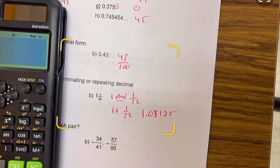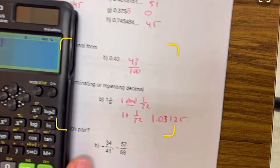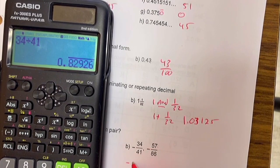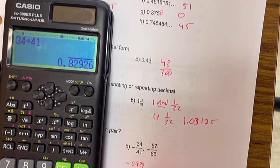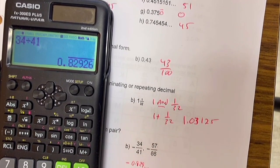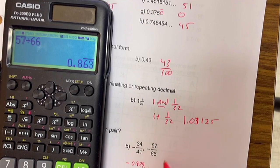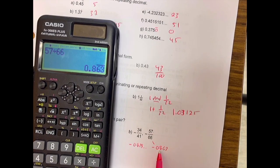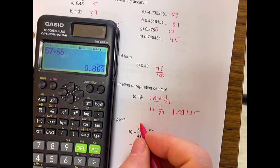34 over 41. I'm not bothering with the sign. It's equal to 0.829, negative 0.829 dot dot dot. And this one is 57 divided by 66 is 0.86, negative 0.863. The 0.863 is bigger, but we're talking about negatives, because the one closest to zero is actually bigger. This guy is the bigger.